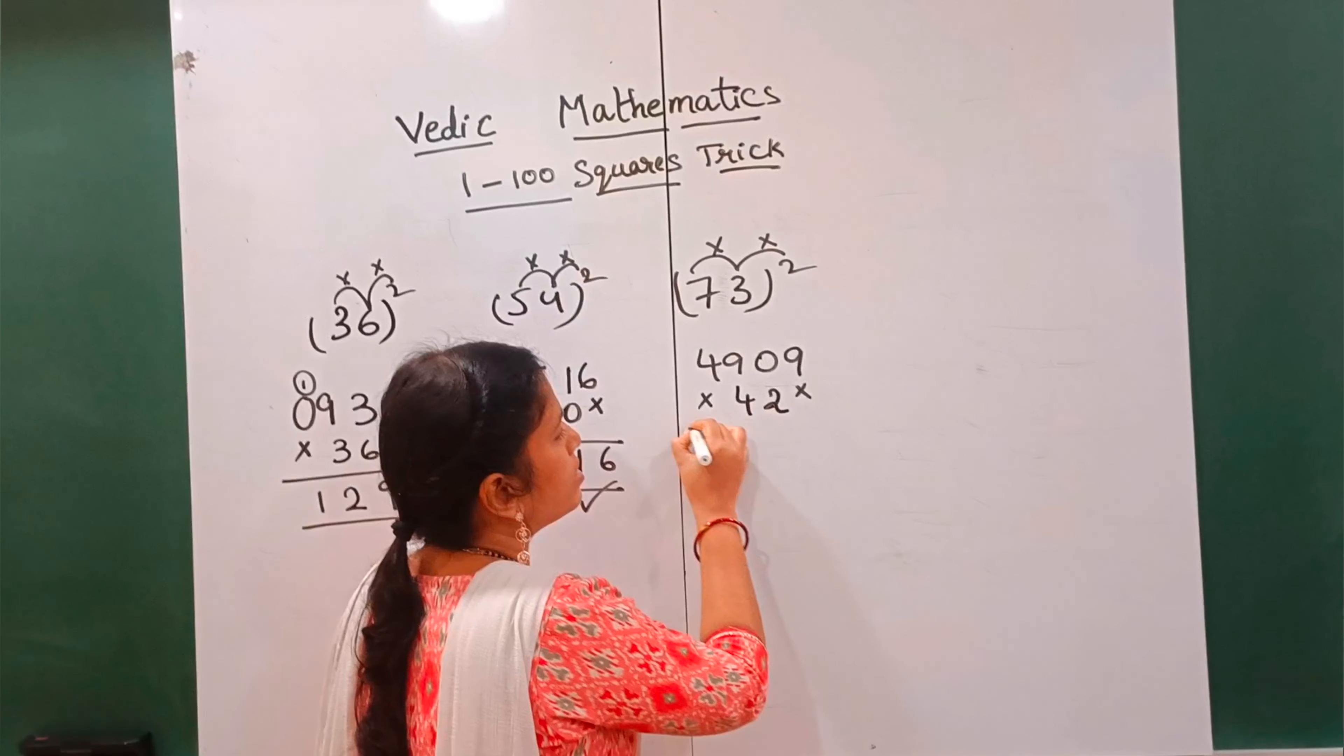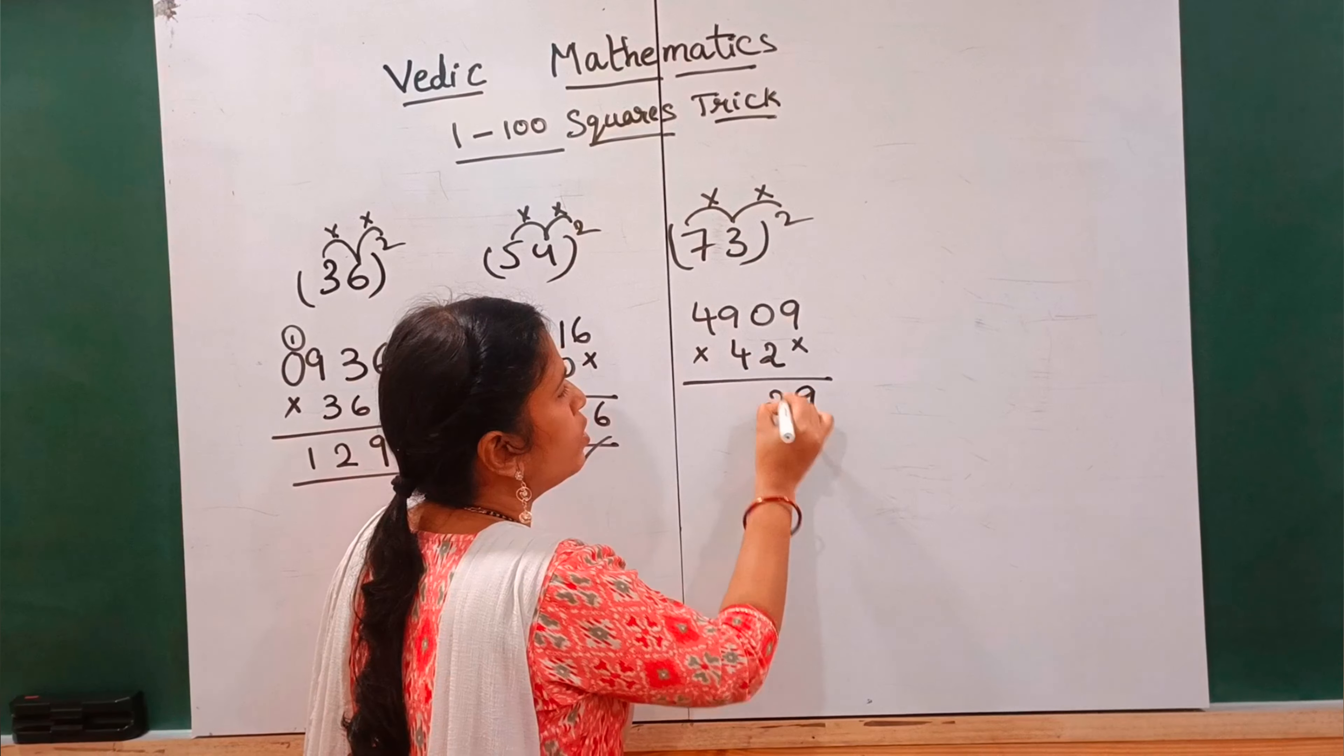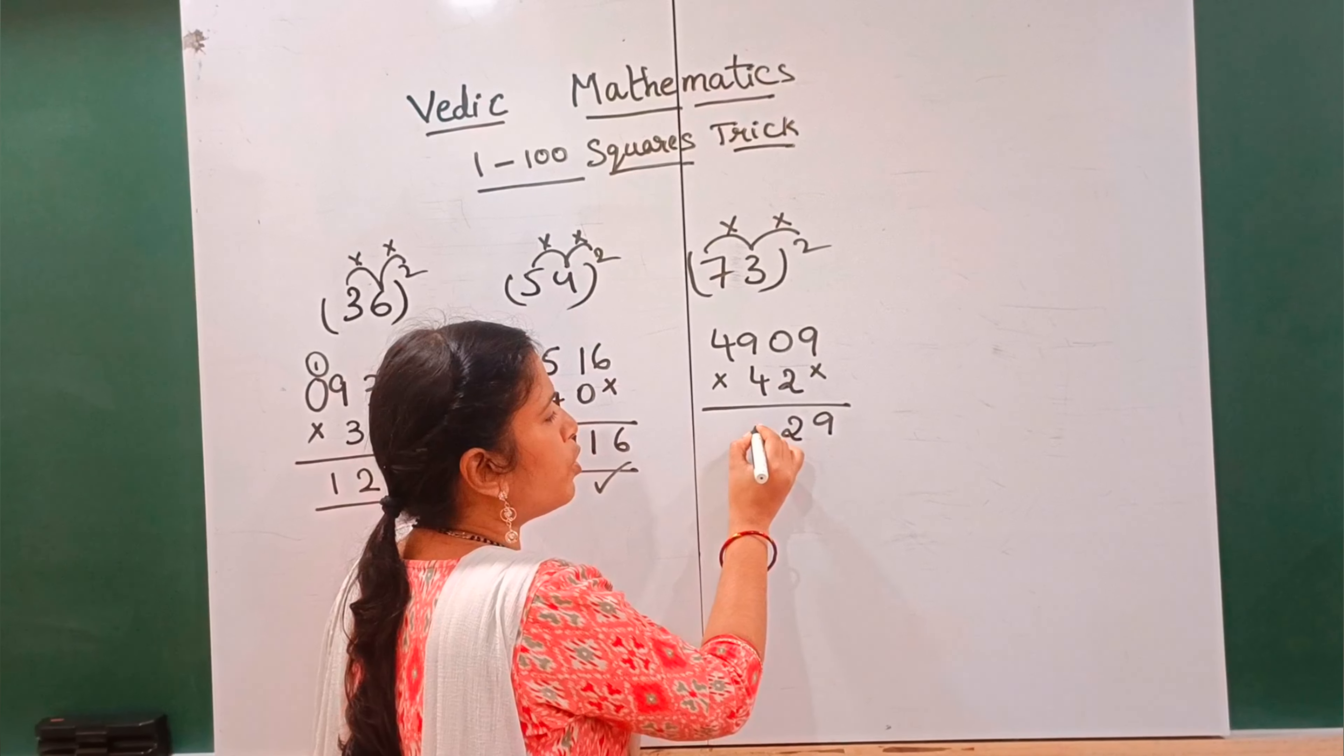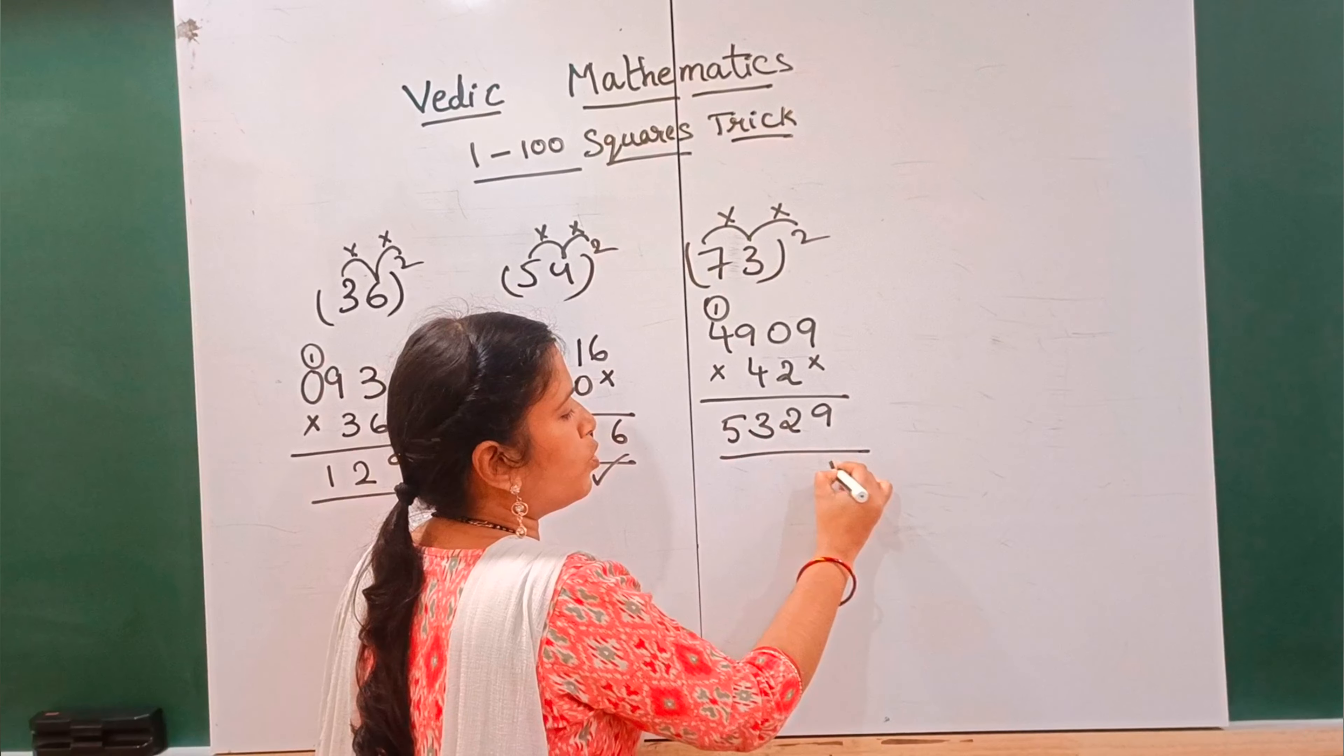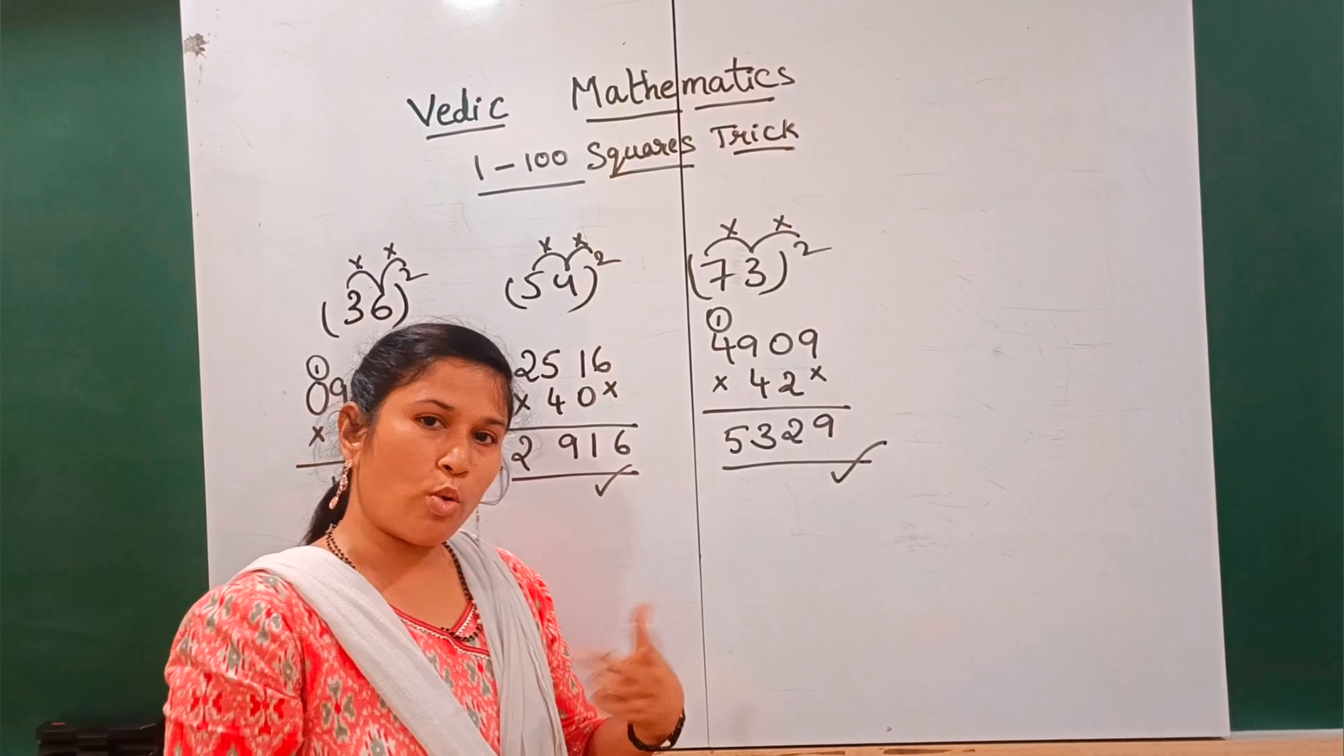42 is the middle value. 9, then 2. 9 plus 4 is 13, 1 carry. This means 5. So 5329 is the answer.